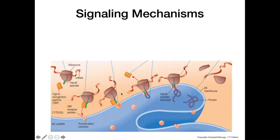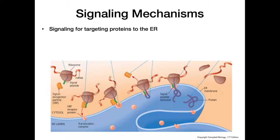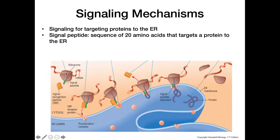Now looking at signaling mechanisms — signaling can be a couple of different things, but we're going to look at the one that signals for the protein to be brought to the endoplasmic reticulum. When this protein starts to get synthesized, we're going to have a sequence of about 20 amino acids close to the N-terminus called the signal peptide, which signals for this entire complex to be brought to the membrane of the endoplasmic reticulum.